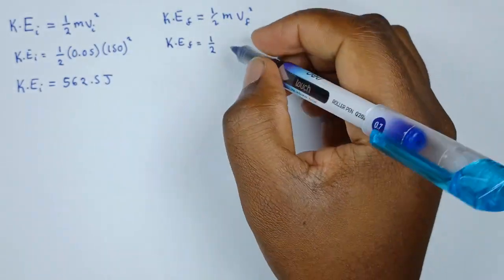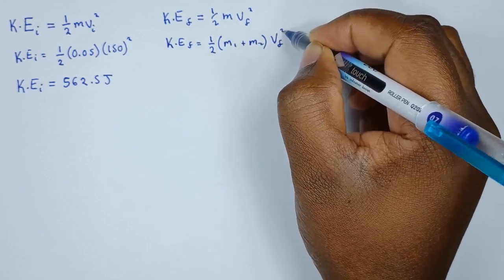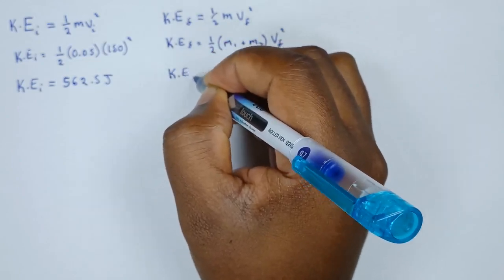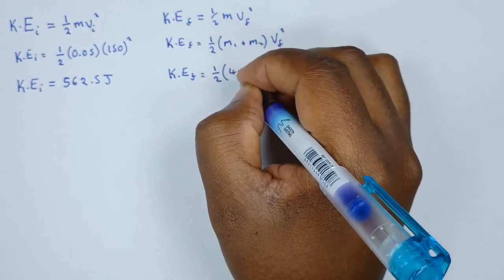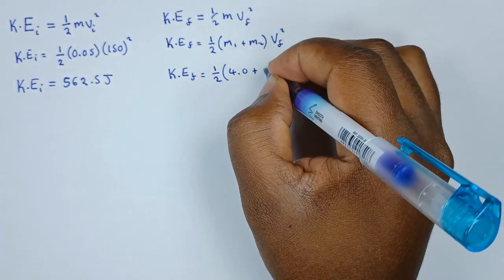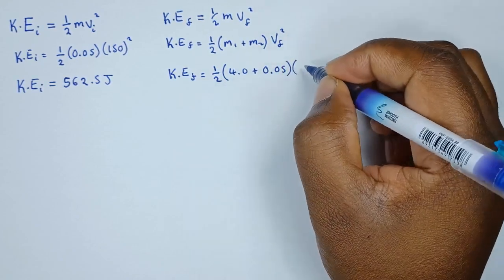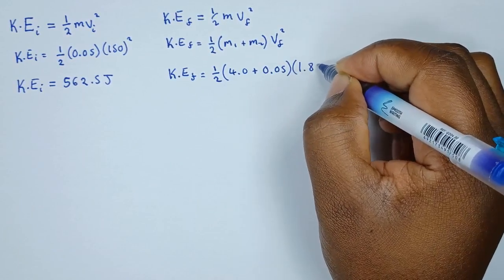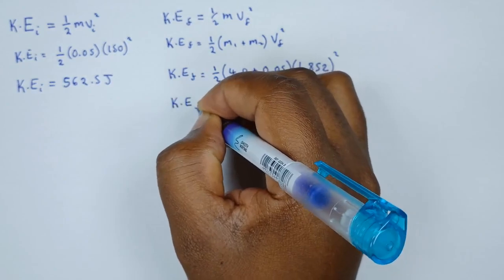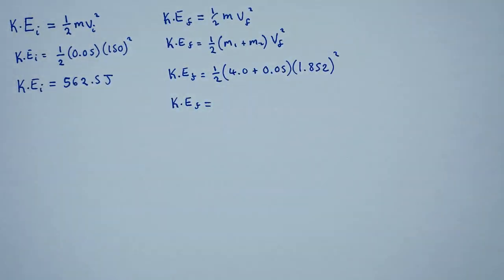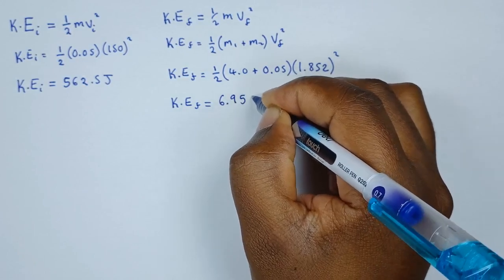After collision, the kinetic energy equals ½ × (m1 + m2) × v_final². Since they become embedded, the mass is 4.0 plus 0.05, with the final velocity of 1.85 meters per second. Computing this gives a final kinetic energy of 6.95 joules.